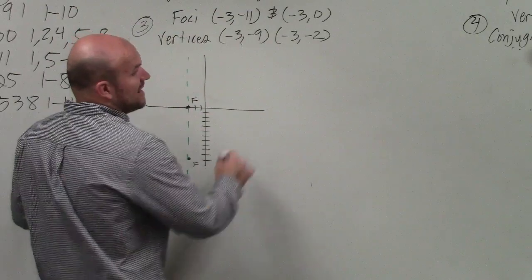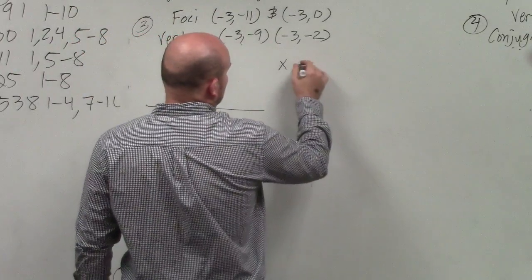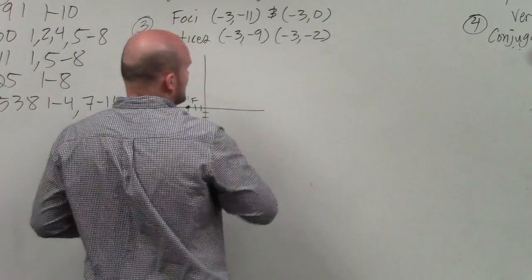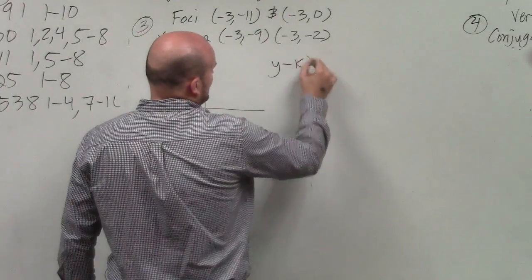Therefore, automatically, by now, I already know the equation type that I'm going to have. I have a vertical transverse axis, so my equation is going to look like this with y squared.